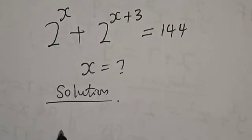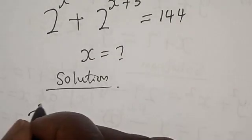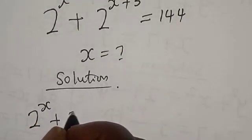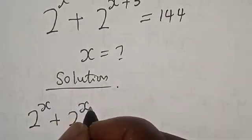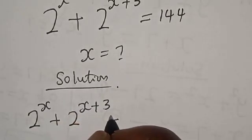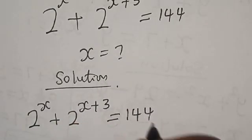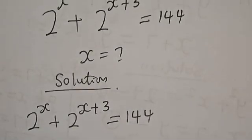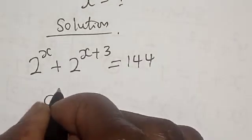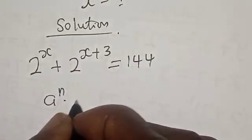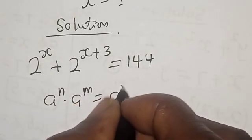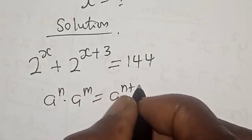We have the given equation: 2 raised to power s plus 2 raised to power s plus 3 is equal to 144. Note that a raised to power n multiplied by a raised to power m is equal to a raised to power n plus m.